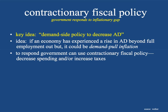So the government wants to keep everything right around the long-run aggregate supply, short-run aggregate supply, and aggregate demand equilibrium. The idea is that if an economy has experienced a rise in aggregate demand beyond full employment output, it could be demand-pull inflation — inflation happening as a result of too much demand.